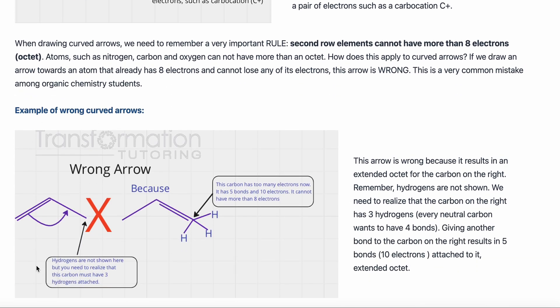For example, let's say I'm trying to draw a resonance for this molecule and this is the arrow I have drawn. This arrow is wrong because the carbon on the right side is neutral — no charge has been shown — and that means it has four bonds and eight electrons. It has two electrons in this bond, plus three hydrogens that have not been shown, so this carbon already has eight electrons.